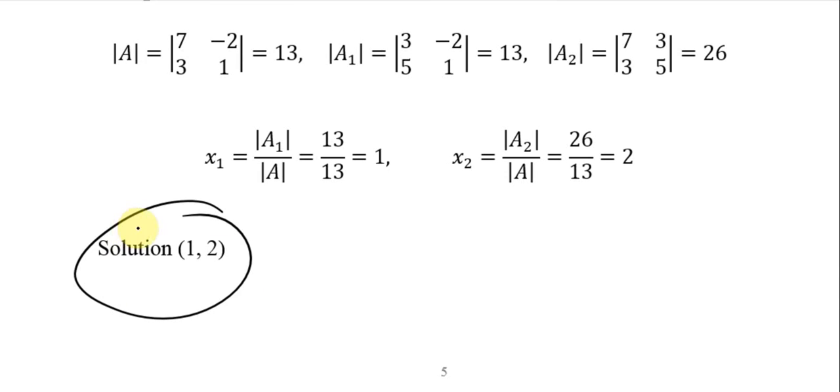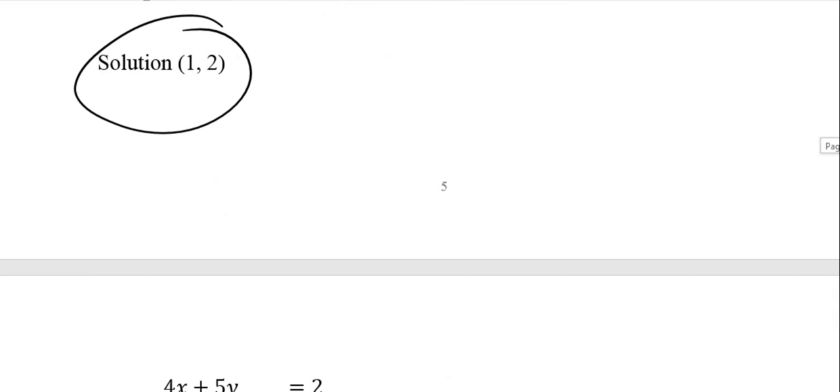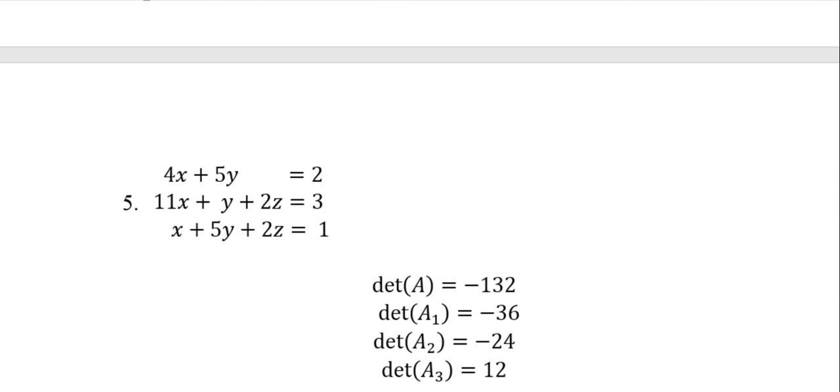Now if it's a 3 by 3, no problem. We still can apply Cramer's Rule. So here, the determinant of A is going to be 4, 11, 1, 5, 1, 5, 0, 2, and 2. Now you work that out, and I did already, so we got negative 132.